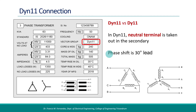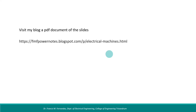I hope this has given an idea of what vector groups are in three-phase transformers. All the slides shown here are available for download as a PDF file in my blog, and the link is given in the description below. Thank you for watching.